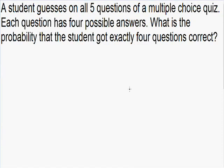Welcome to my video on binomial distribution. It's really important to know that this method of probability is only possible if there are two outcomes. An easy example would be flipping a coin five times. When you flip a coin there's only two possible outcomes — it's either going to be heads or tails. So it is possible to use the binomial distribution to solve the probability of how many of those five coin tosses are heads and how many are tails. Just remember that this method is only possible when there are two outcomes.